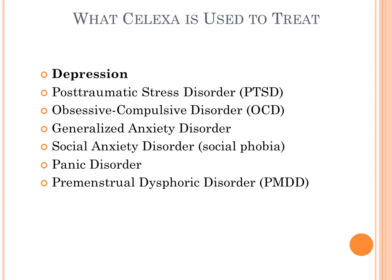Celexa is usually used to treat depression, PTSD, OCD, Generalized Anxiety Disorder, Social Anxiety Disorder, Panic Disorder, and PMDD. Depression is listed in bold because it is the FDA approved use for the drug. However, Celexa has been found to be used effectively against anxiety.